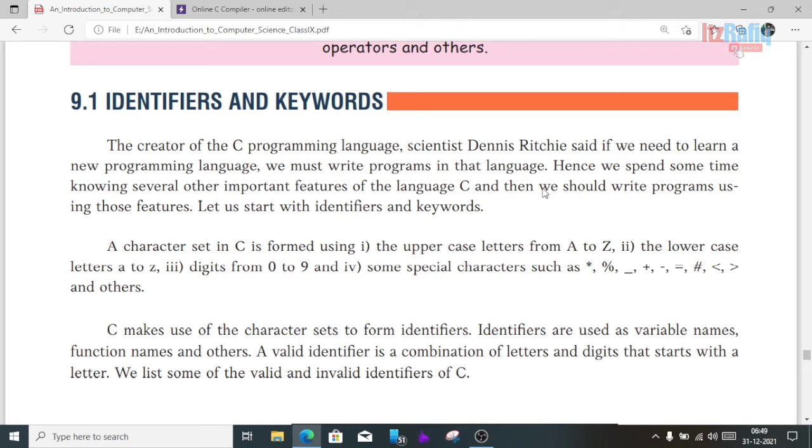A character set in C is formed using uppercase letters from capital A to Z, lowercase letters a to z, digits from 0 to 9, and some special characters like asterisk, percentage, underscore, plus, dash, equal, hash, greater than, less than, etc. All these are part of the character set.